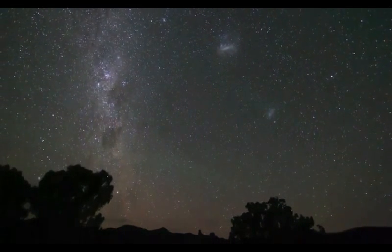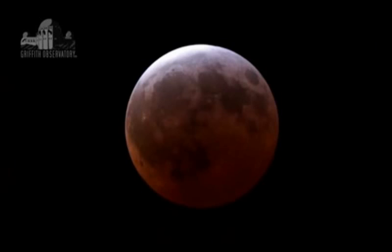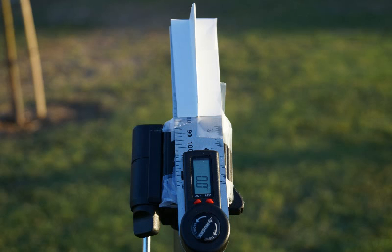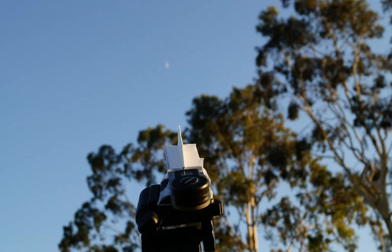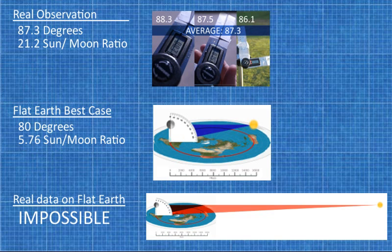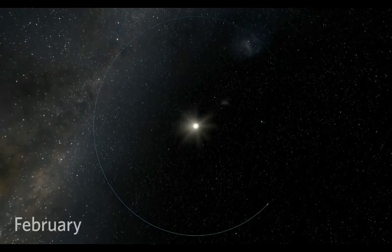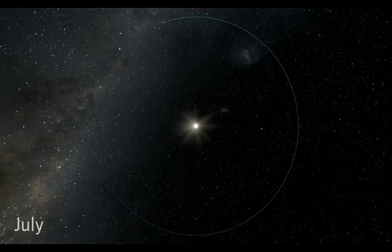For many months now, many of you flat earthers have been telling me I need to do my own research, while you largely ignore all the evidence I have provided in this series. So now it's time for you to put your belief to the test. Do these two experiments, carefully and honestly, and then try to explain your results with the flat earth model. You will see why the flat earth model simply does not fit the reality in which we live. Only a spinning, sun-orbiting sphere explains all these observations. Thanks for watching.